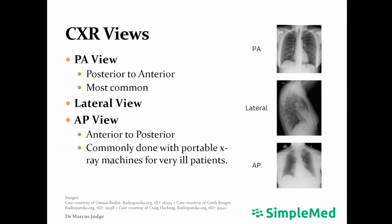It is worth noting that an AP view cannot be used to interpret the size of the heart. Objects nearer to the X-ray tube appear artificially enlarged due to divergence of the X-ray beam, resulting in the heart appearing artificially large on AP radiographs. A PA radiograph should be used to measure the cardiothoracic ratio.